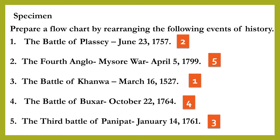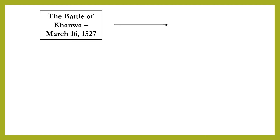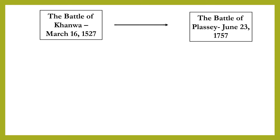So here we have arranged our events in order. Now we will put these events in the boxes. We will put the first point in the first box — that is the Battle of Kanwa, March 16, 1527. After this, we draw an arrow that will indicate the next event. Then draw a box and write down the second event: the Battle of Plassey, June 23, 1757.